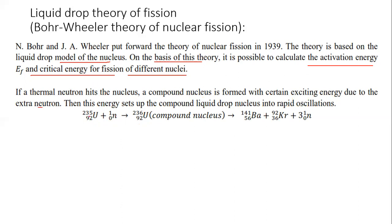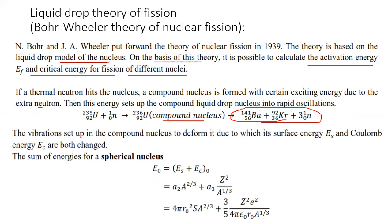When 92 uranium-235 is hit by neutrons, we get 92 uranium-236 atom. This is what is called compound nuclei as we already explained in the earlier class. The vibration sets the compound nucleus to deform, due to which surface energy and Coulomb energy are both changing. The sum of energy of the spherical nucleus is the Coulomb energy and surface energy. This can be written as a2 into A raised to 2/3 and a3 into Z squared by A raised to 1/3. These formulas compare to 4 pi r squared for surface area and the Coulomb energy factor.